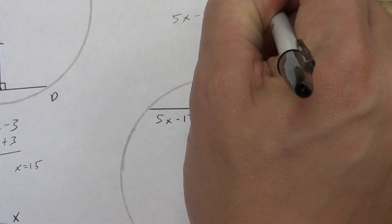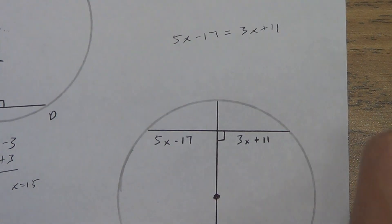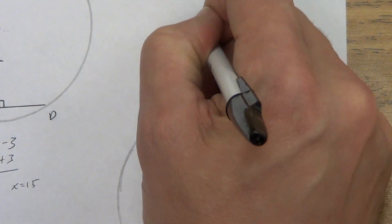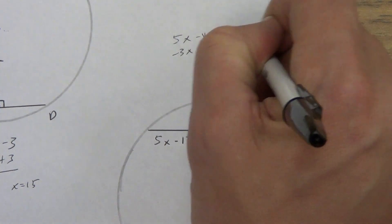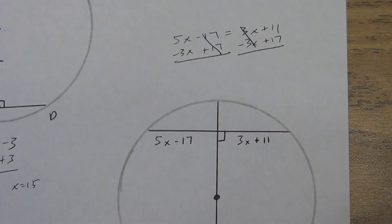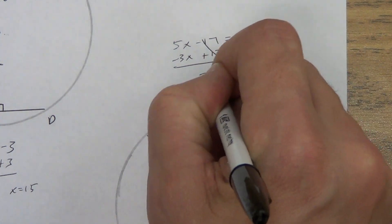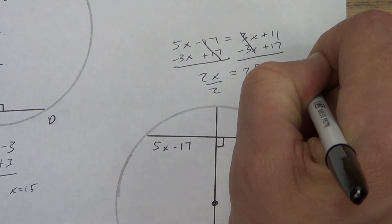Alright, I'm going to subtract 3x from both sides. At the same time, I'm going to add 17 to both sides. Kind of shorten up the steps a little bit. 5x minus 3x is 2x. 11 plus 17 is 28. Divide by 2.